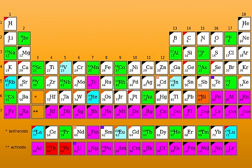Elements are the most basic chemicals. There are some principal elements found in the human body. Hydrogen is the smallest element with only one proton and is a component of water and many other compounds found in the body. Carbon is an element found in all organic molecules. Oxygen is a component of water and many other compounds.